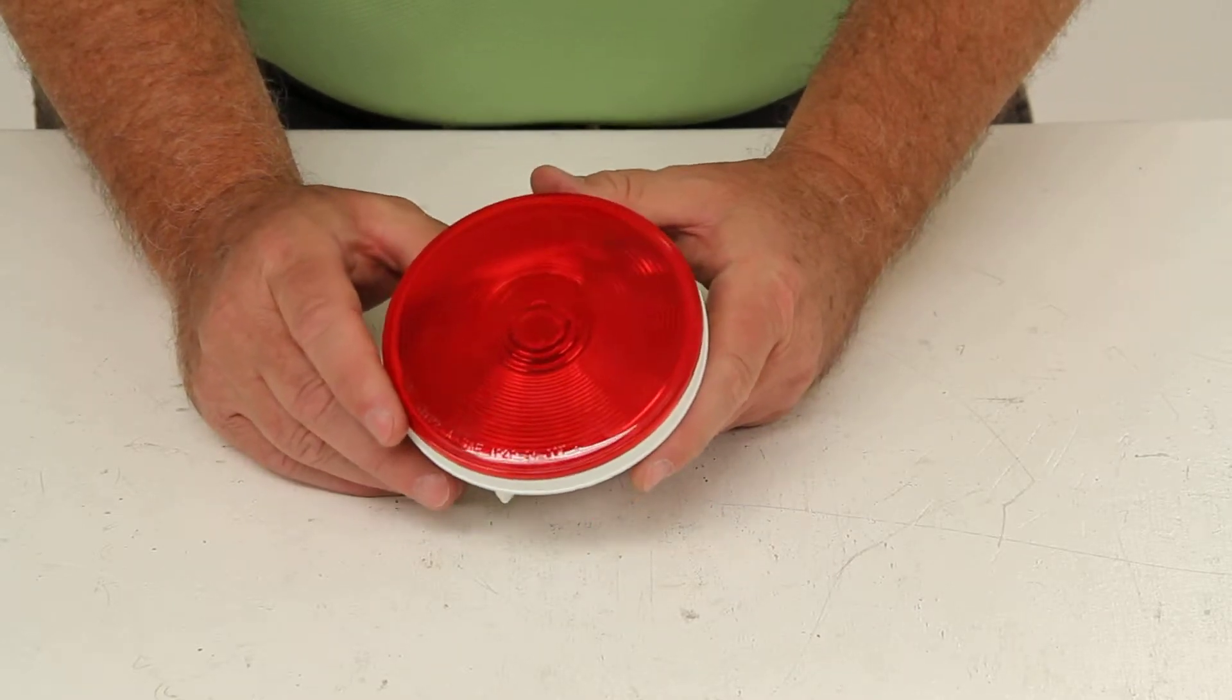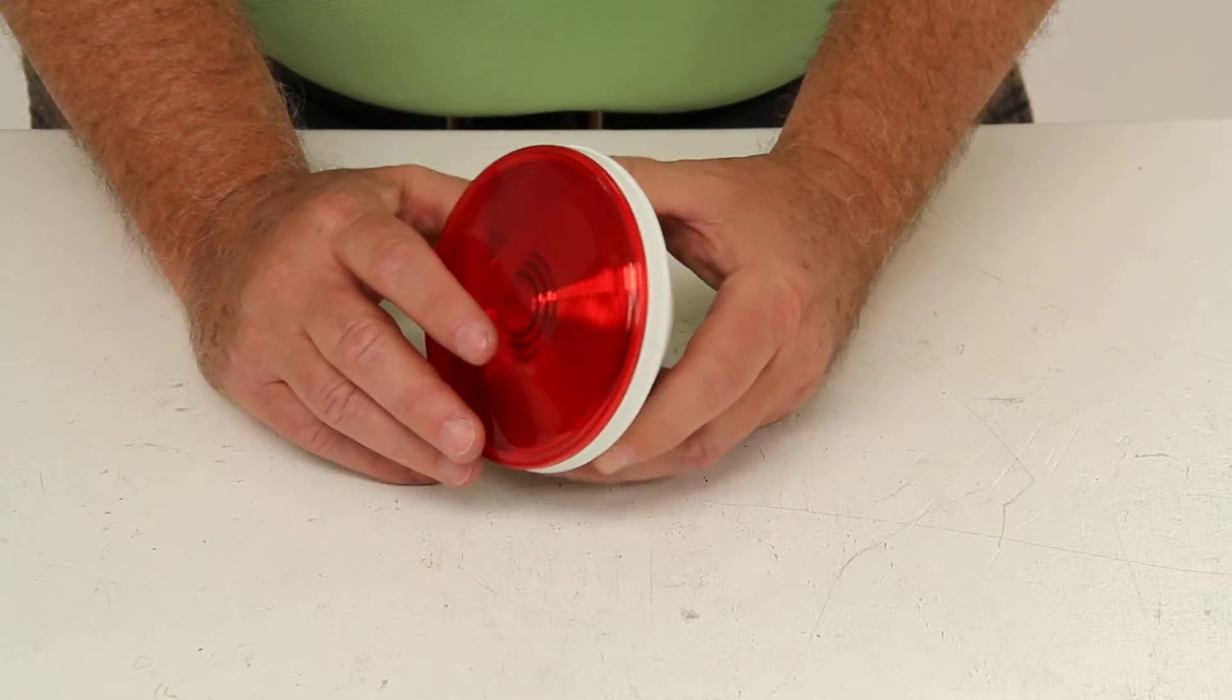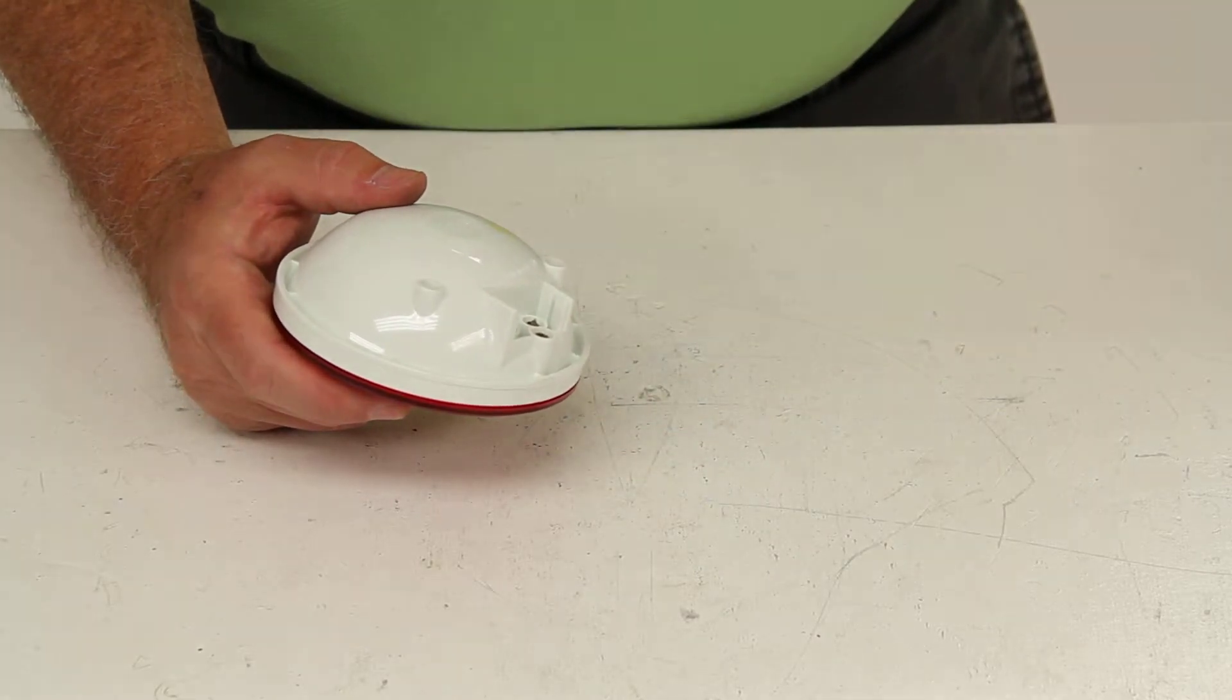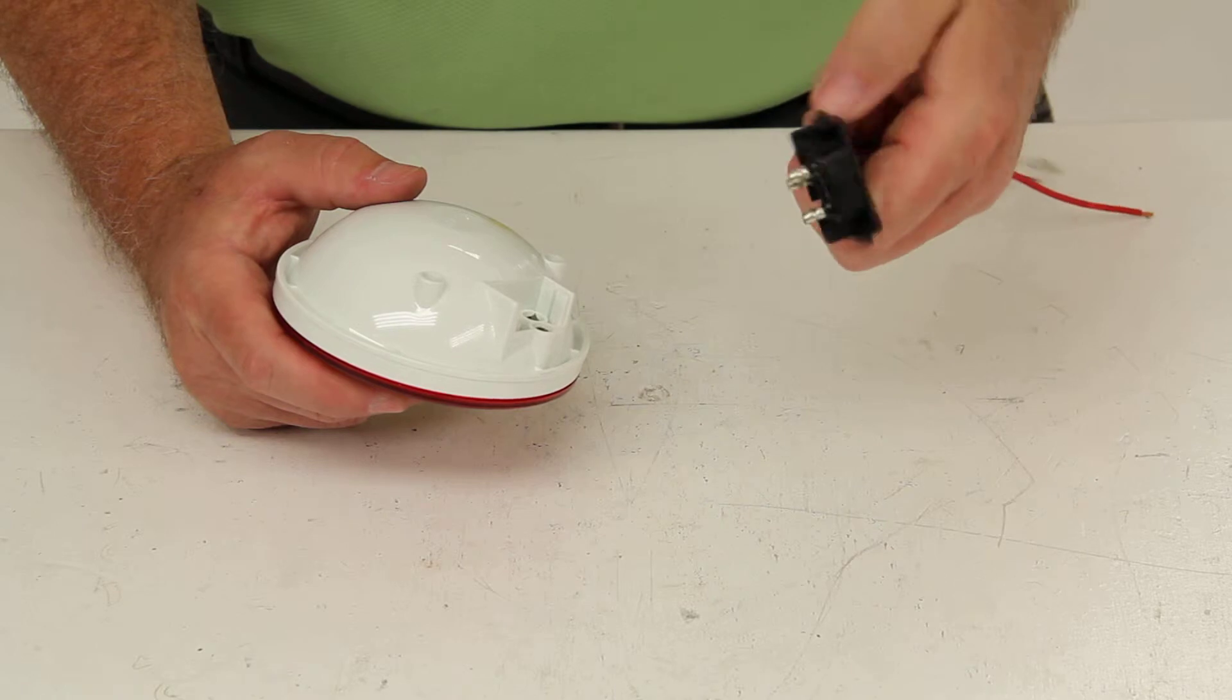This light will flush mount using a mounting grommet, which is sold separately. And it will connect by using an industry-standard three-prong plug, which is also sold separately.